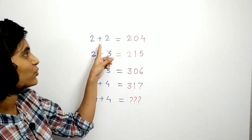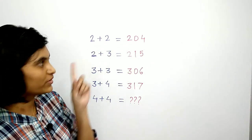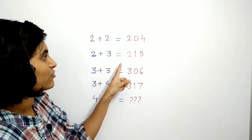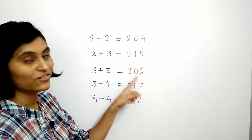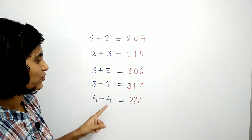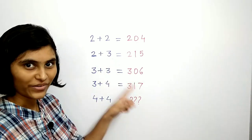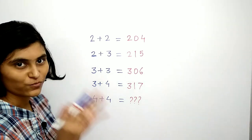Here we have 2 plus 2 is equal to 204. 2 plus 3 is equal to 215. Then 3 plus 3 is equal to 306. 3 plus 4 is equal to 317. And what is 4 plus 4?